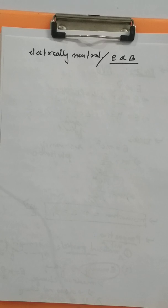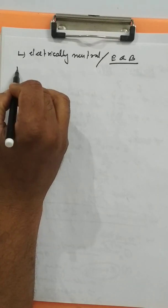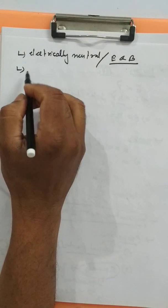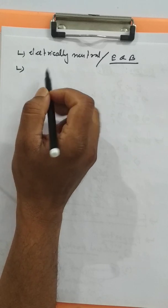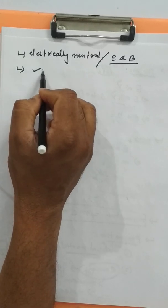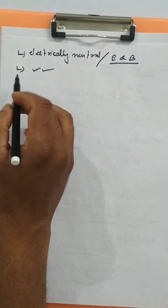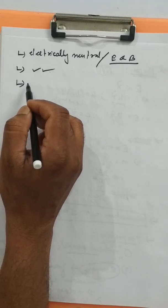Another point: photon does not exist at rest. That is, the rest mass of photon is zero.